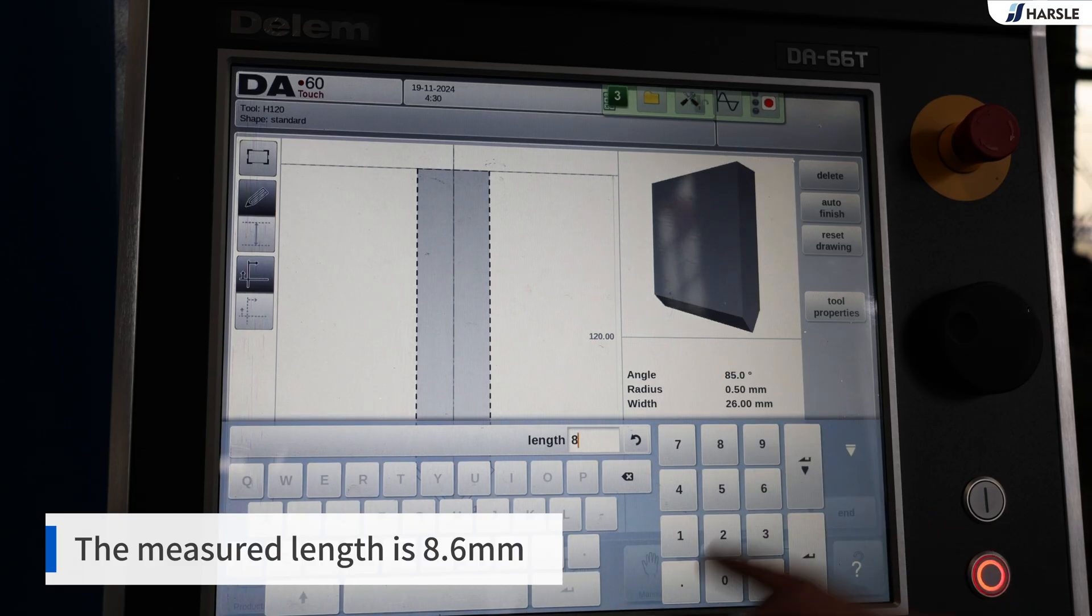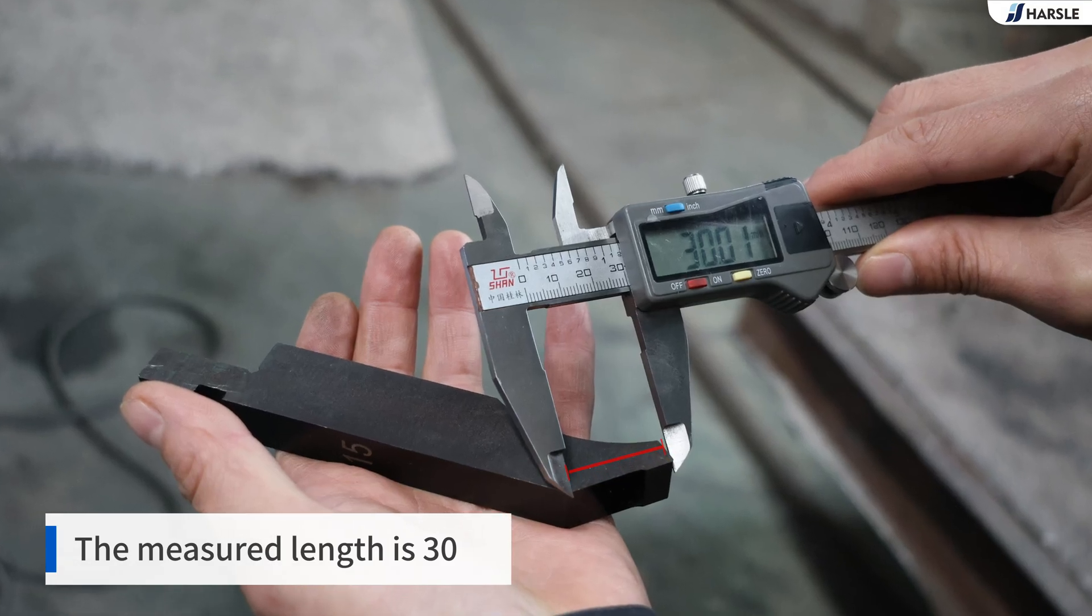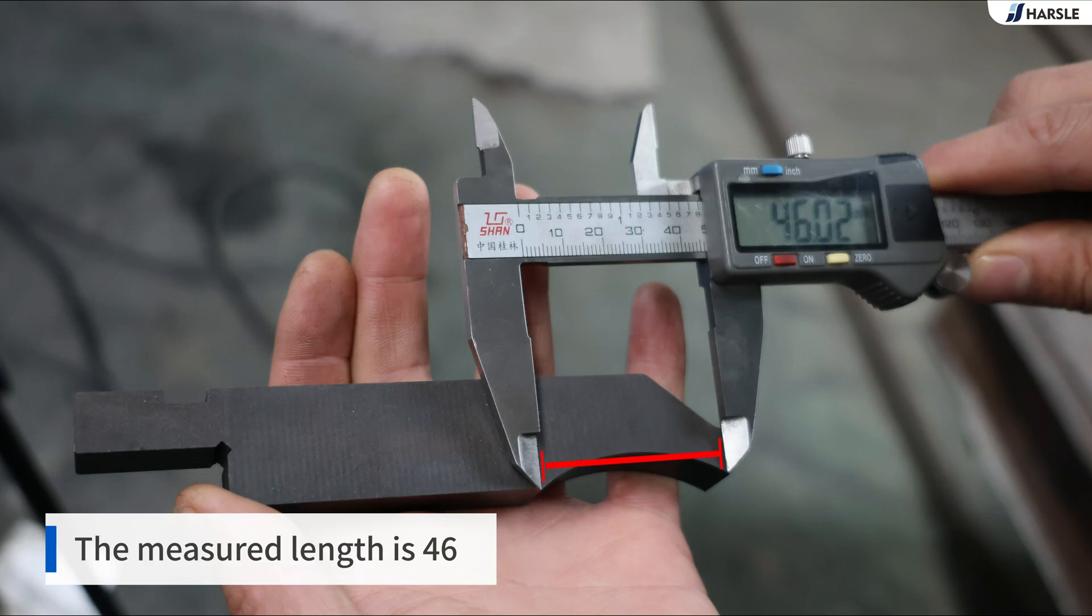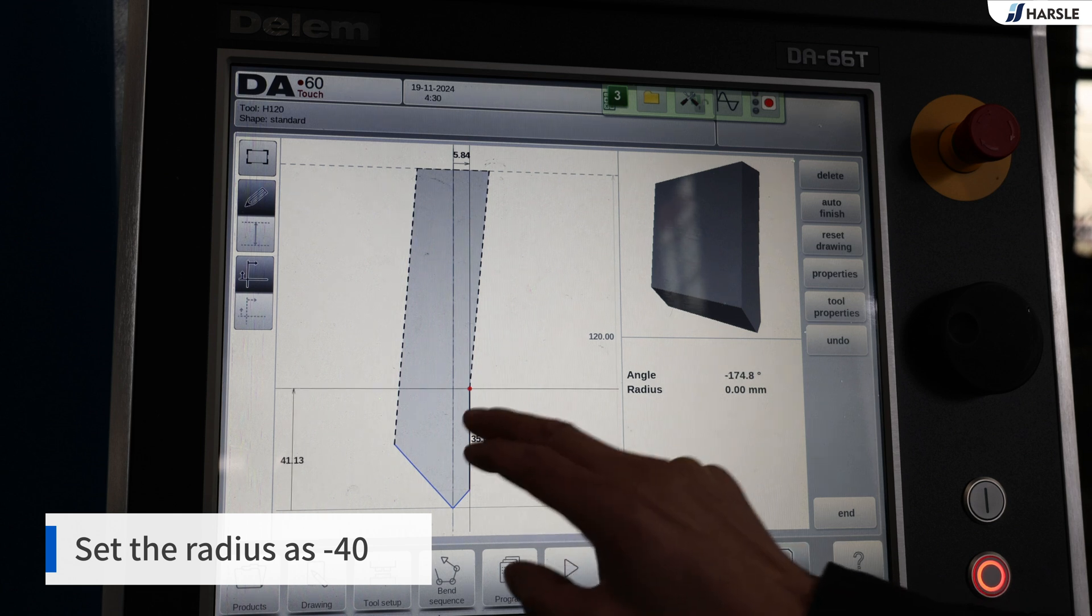The measured length is 8.6. The measured length is 30. The measured length is 46. Set the radius as minus 40.